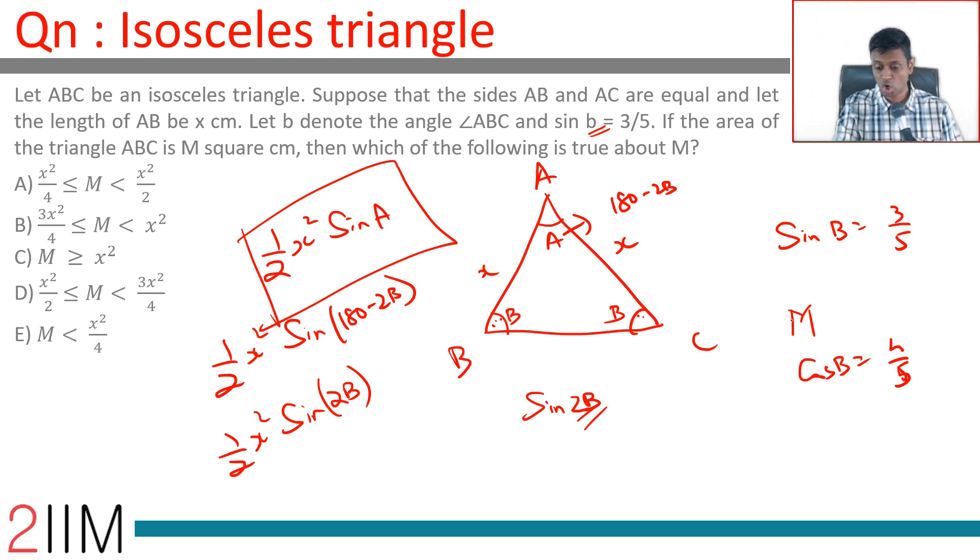Don't worry about cos B being minus 4 by 5 because this cannot be an obtuse angle. The equal angle in an isosceles triangle cannot be obtuse.